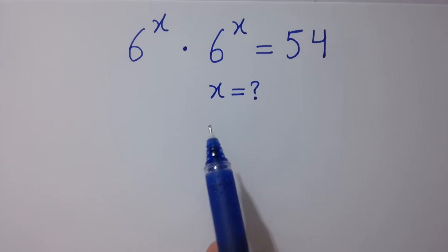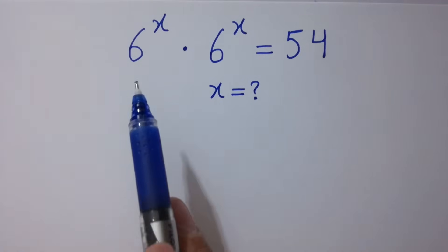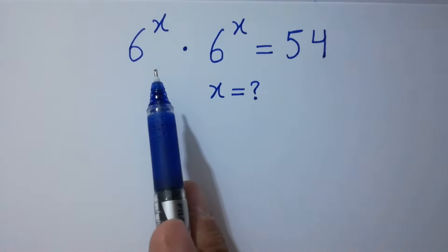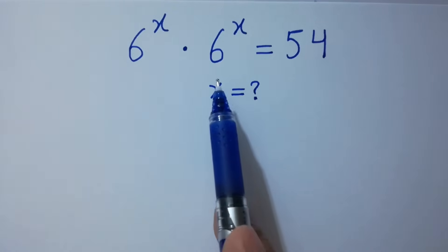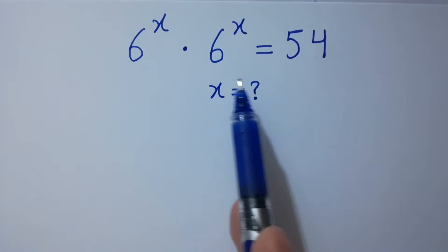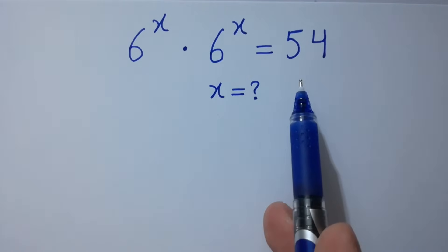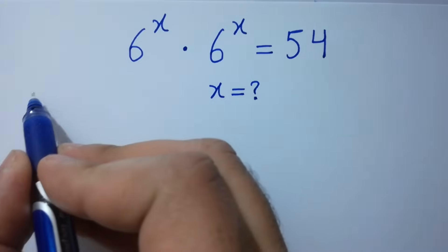Hello friends. Find the value of x if 6 to the power x times 6 to the power x equals 54. Let's have a solution.